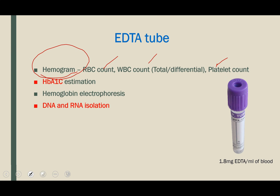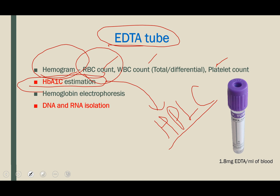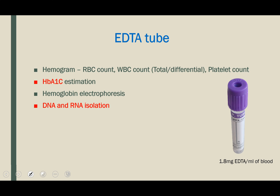In the clinical pathology laboratory, for sending hemogram, RBC count, WBC count, platelet count, you have to send samples in the EDTA tube. In the biochemistry laboratory, for HbA1c estimation through HPLC — high performance liquid chromatography — you also send in the EDTA tube. HbA1c relates to hemoglobin and RBCs, so for hemoglobin electrophoresis you also use the EDTA tube.